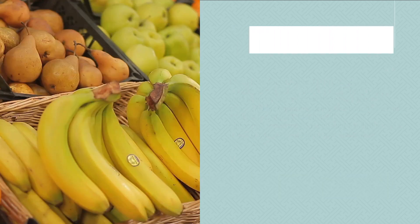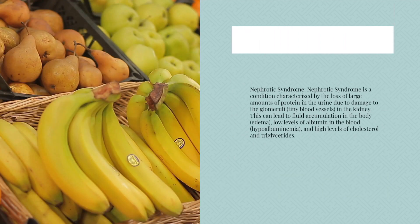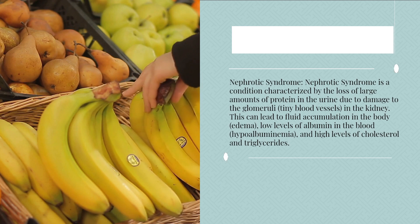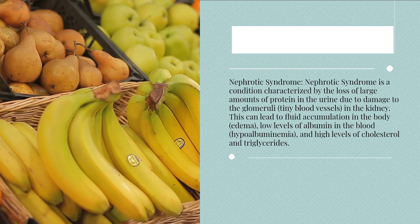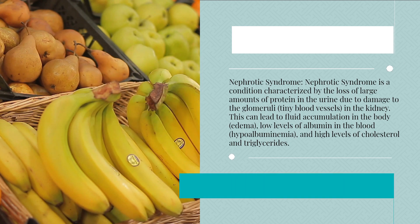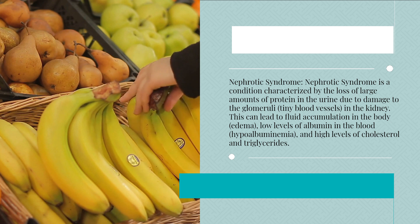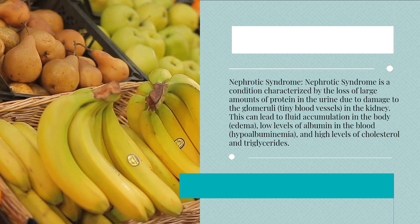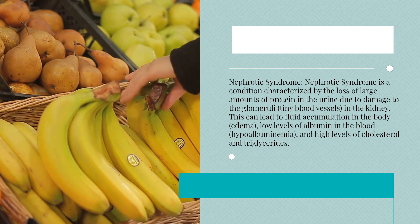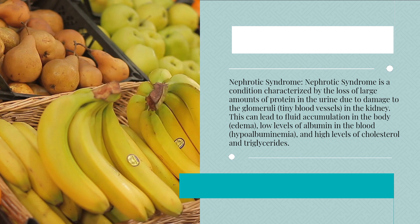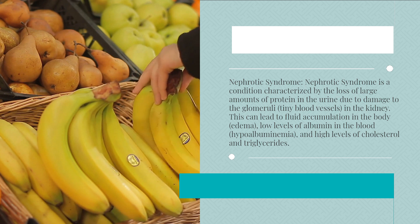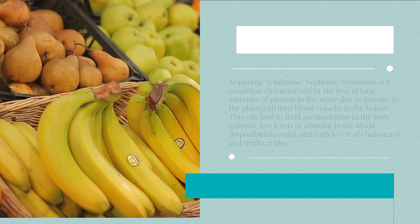Nephrotic syndrome is a condition characterized by the loss of large amounts of protein in the urine due to damage to the glomeruli, tiny blood vessels, in the kidney. This can lead to fluid accumulation in the body (edema), low levels of albumin in the blood (hypoalbuminemia), and high levels of cholesterol and triglycerides.